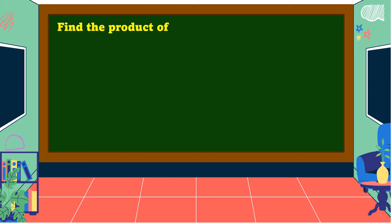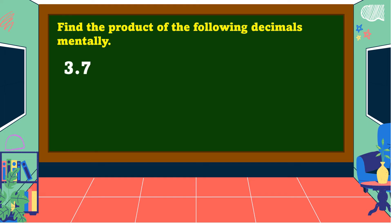Let's have some exercises. Find the product of the following decimals mentally. Three and seven-tenths times one-tenth. The answer is equal to thirty-seven-hundredths.